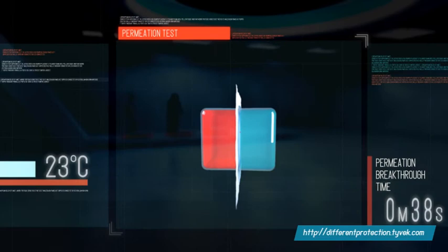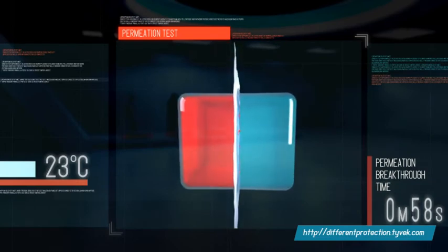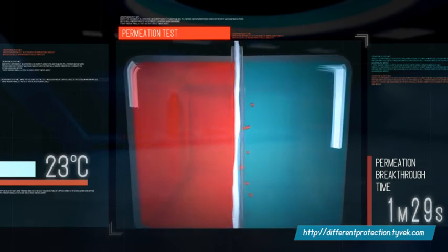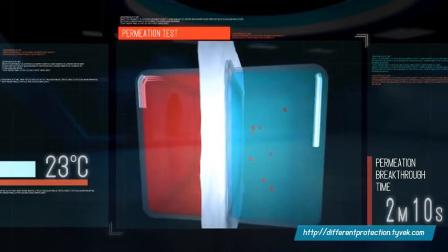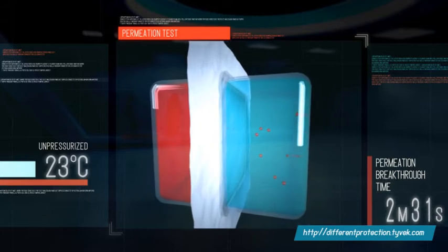But the differences are much more substantial when it comes to permeation. Permeation is a chemical process in which the molecules of a hazard pass through a fabric. It is less obvious than penetration and takes more time.